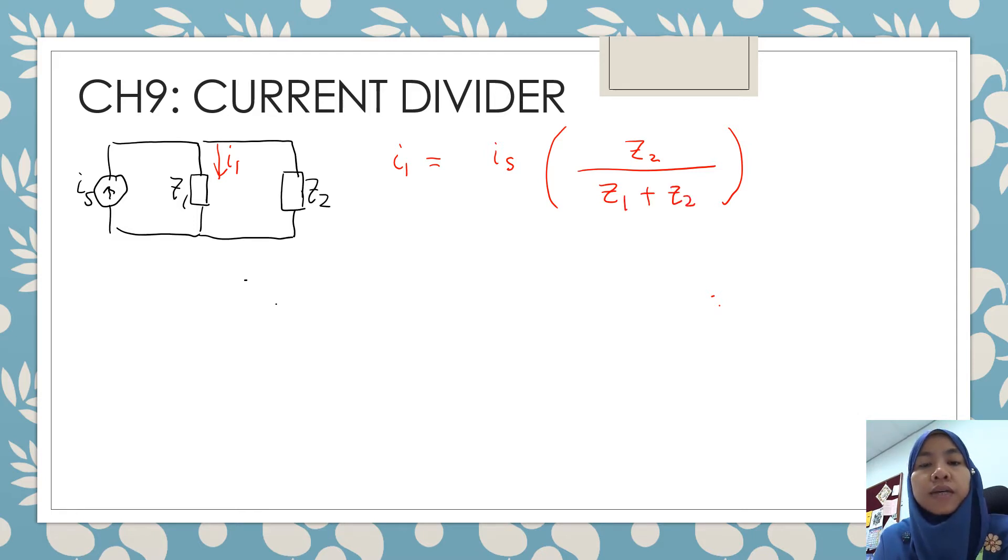And then what is the sign for this current divider? You need to look at the direction of the current source, which is going up. And then the current I1 we want to find, which is going down. Now, if these are two opposite directions, then our sign will be positive.